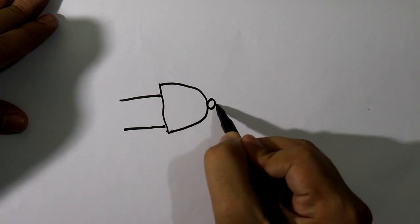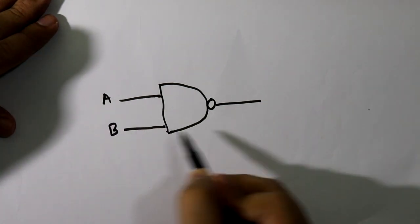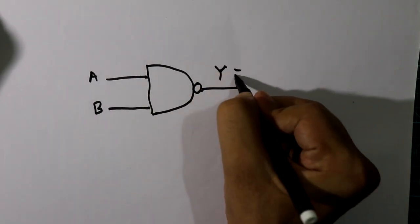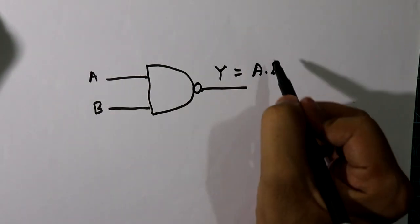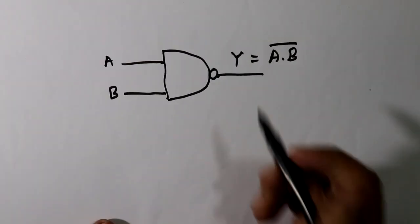Here input A, input B, and this one is output. The output of NAND gate will be A dot B and then it will make complement, right? So truth table of NAND gate will be A, B, that is Y, and it is Y complement.